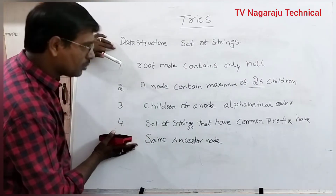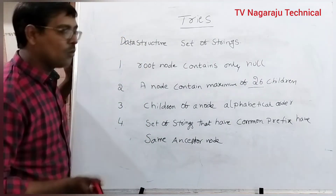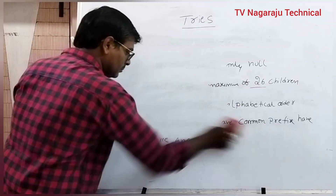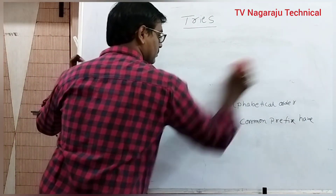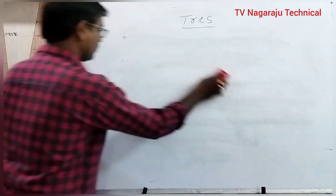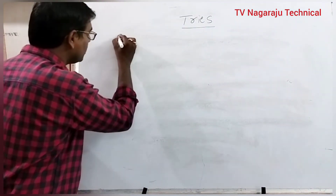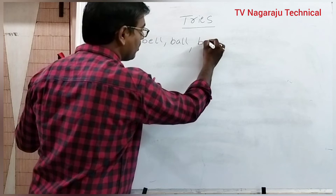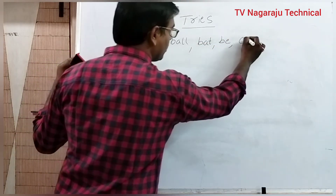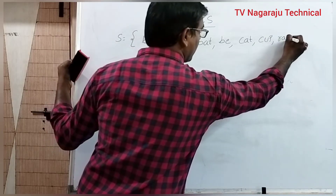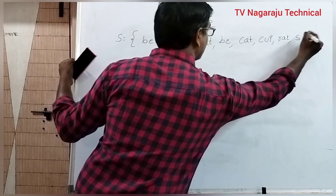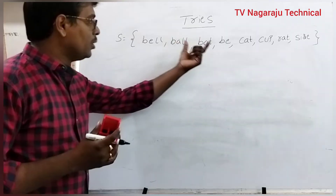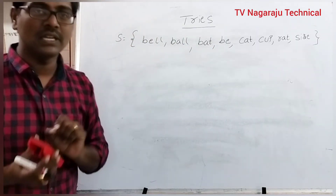Remember the rules. Based on these rules, I will explain one example of how to construct a tree. Consider a set of strings: bell, ball, bat, bee, cat, cup, rat, size. Assume these are the set of strings. You have to represent the set of strings in a tree format.